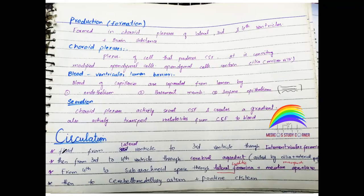Now let's talk about circulation. CSF is produced in the lateral ventricle, then flows to the third ventricle through the interventricular foramina. Then from the third ventricle to the fourth ventricle through the cerebral aqueduct. From the fourth ventricle it moves through two foramina: the lateral foramina — foramen of Luschka — and the medial foramen — foramen of Magendie. After that it enters the cerebellomedullary cistern, the pontine cistern, then the subarachnoid space, and finally the venous return.